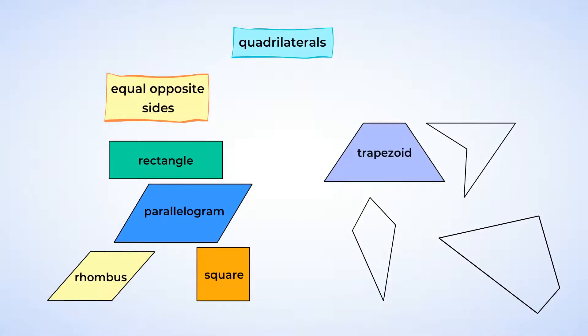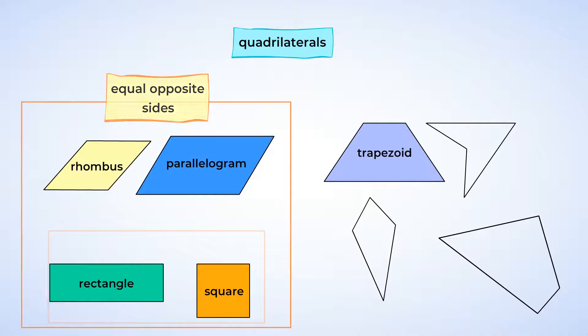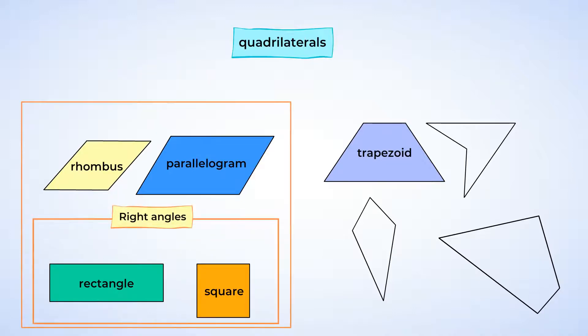Now that we can separate the quadrilaterals that have right angles, the square and the rectangle are the only ones left. And what is the difference between them? Of course you know, it's in their sides. A square has all its sides equal, whereas a rectangle has its opposite sides equal.